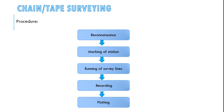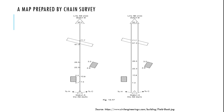Talking about chain surveying, it is a primitive method where only linear measurements are made. It is suitable for survey of small areas with simple detail. The major surveying procedures of chain surveying are shown here, and here is a sample of the output map prepared from the chain survey.